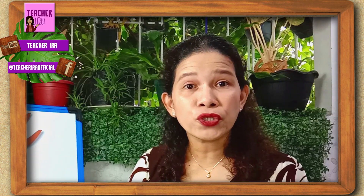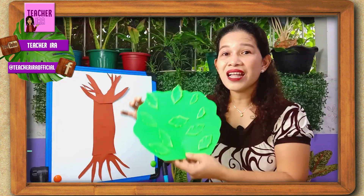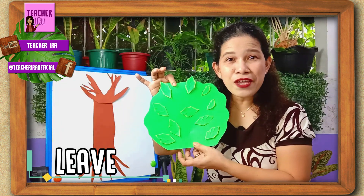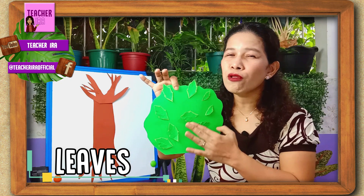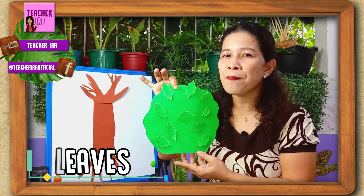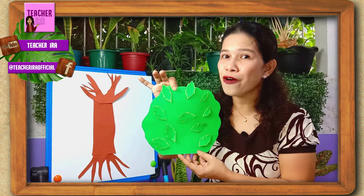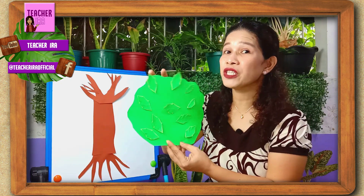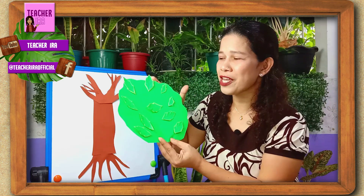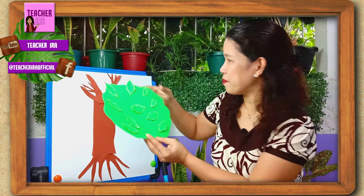The next part I'm going to show you is the same as for the small plant, but this time they are more and they are bigger. These are the leaves. They look like a big crown for the tree. Let me put the leaves here so that you can see it better.